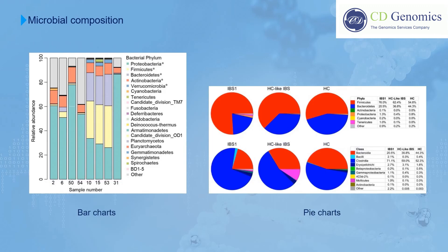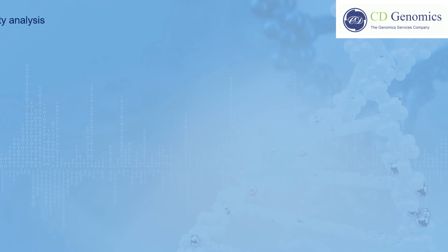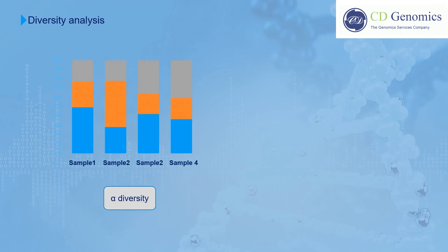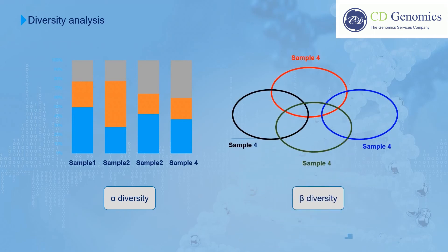After taxonomic profiling, microbial composition and diversity analysis can be performed. Microbial composition is a procedure to analyze microbial community structures, and is often displayed using bar charts or pie charts. Diversity analysis is performed to better evaluate microbial abundance and diversity. Alpha diversity refers to species richness within a single microbial ecosystem, and beta diversity describes the diversity in microbial community between different environments, after data normalization.